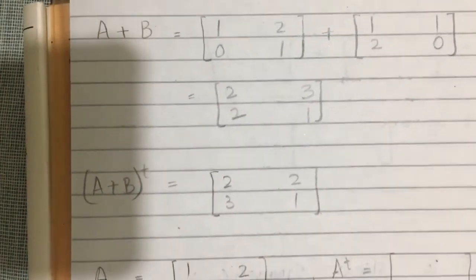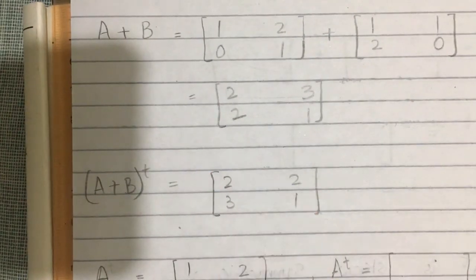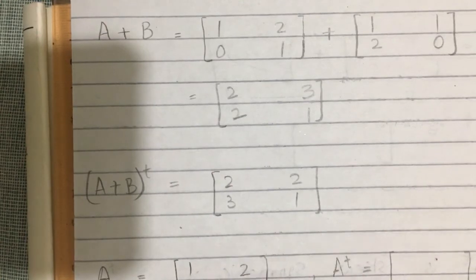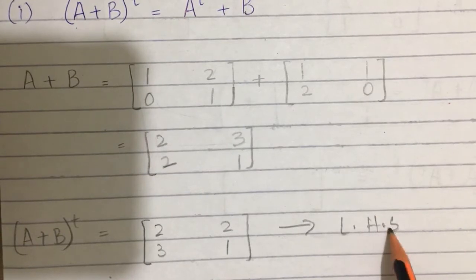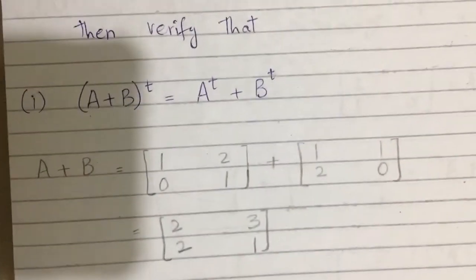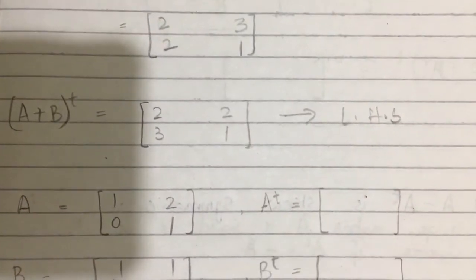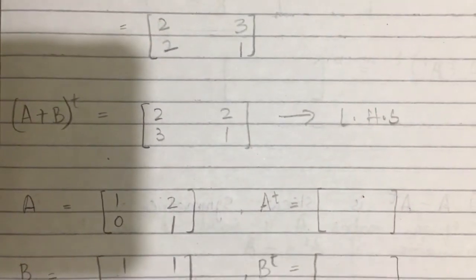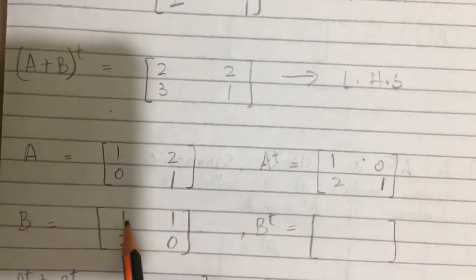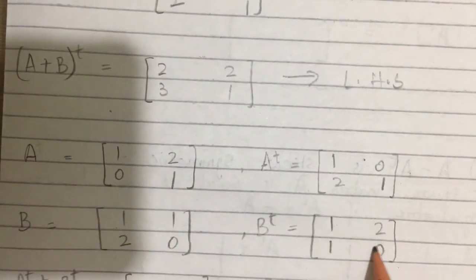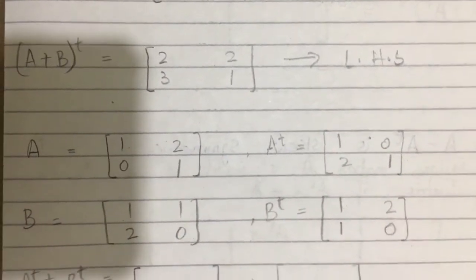So (A+B) whole transpose is equal to [2, 3; 2, 1]. This is the left hand side. Now for the right hand side, which is A^T + B^T, first we take A transpose: [1, 2; 0, 1] and B transpose is [1, 1; 2, 0].